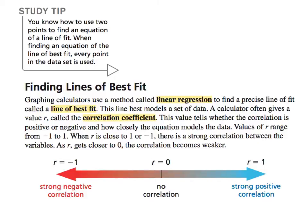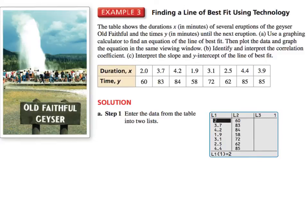Now, this we don't need to write down because we've already done this, but I'm going to review it again. Lines of best fit. When you have a graphing calculator, you can use a method called linear regression to find a precise line of fit, called the line of best fit. Now a calculator will give you the value r, called the correlation coefficient. Looking at this chart, you already know that the closer it is to 0, it's going to be no correlation. The farther to the right, closer to 1, it's a strong positive correlation. And stronger to the left, there is a strong negative correlation. You do not need to write any of this down because you've done this before.